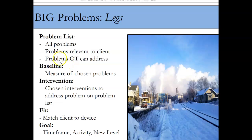It has these different parts to it. The problems — the problem list — we're listing functional problems that are relevant to the client. We don't care about problems that aren't relevant to the client. We're trying to break it down to specific tasks, things that OTs work on. You're getting at that with the modified FIM scores: upper body dressing, lower body dressing, transfers on and off the toilet. Break it down to these little tasks that are measurable. Measurable is the key thing to show insurance and providers that you can make a difference in a clean, measurable way.